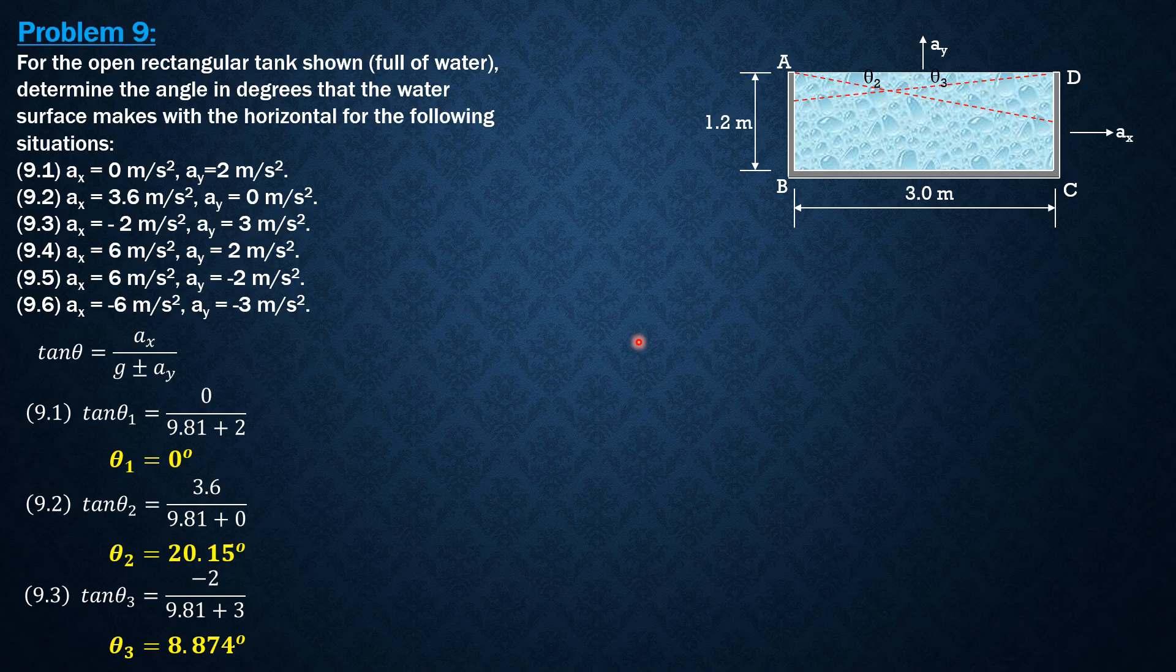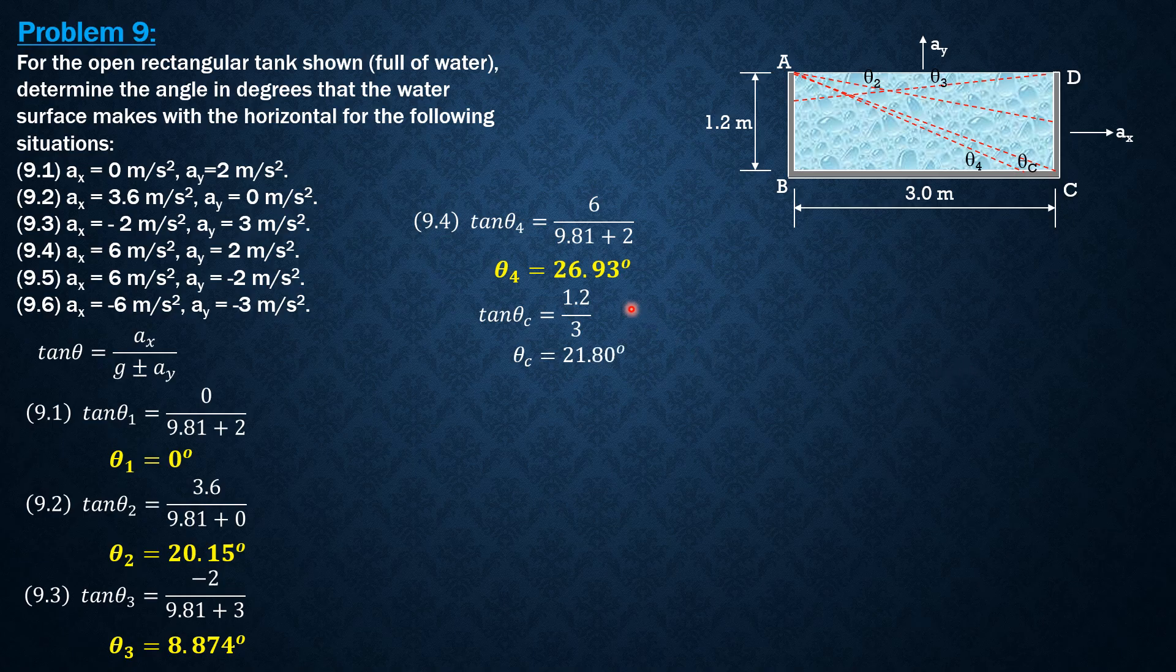So case 4, tangent theta 4 is 6 over 9.81 plus 2. So theta 4 is positive and it is sloping up to the left again, 26.93. So before we show that, let's solve for theta c. So it is greater than theta c. This is theta 4 because theta c is inverse tangent of 1.2 over 3. So if we compute theta c, tangent theta c is 1.2 over 3. So theta c is inverse tangent of 1.2 over 3 and that is 21.8 degrees. So theta 4 is greater than theta c. So that's why this is the surface.